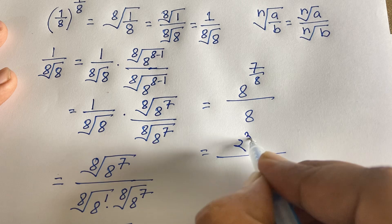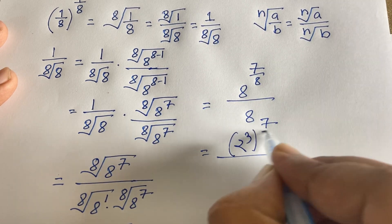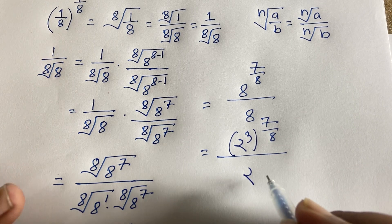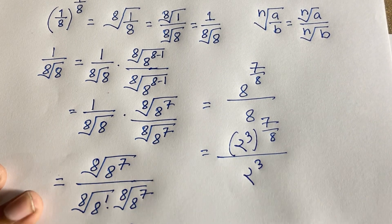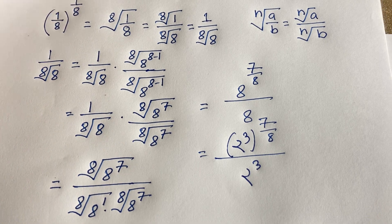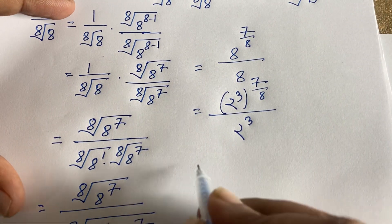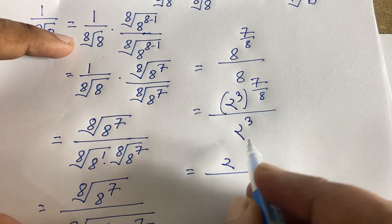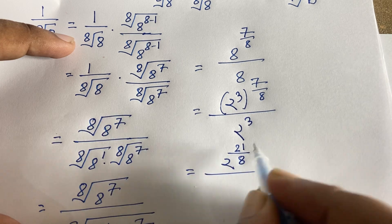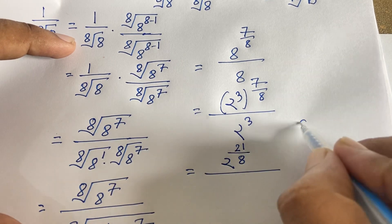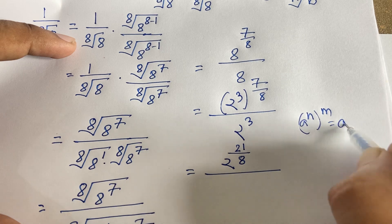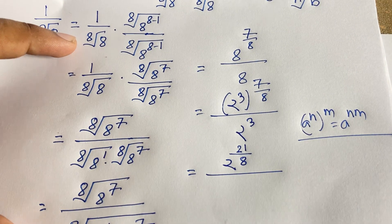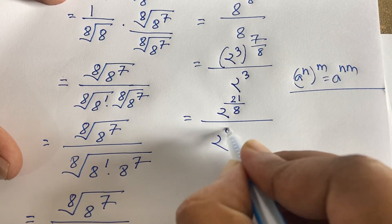Now I substitute 8 = 2^3. So 8^(7/8) becomes (2^3)^(7/8). Using the exponential law (a^n)^m = a^(nm), this gives 2^(3×7/8) = 2^(21/8). And the denominator 8 is 2^3, so we have 2^(21/8) over 2^3.